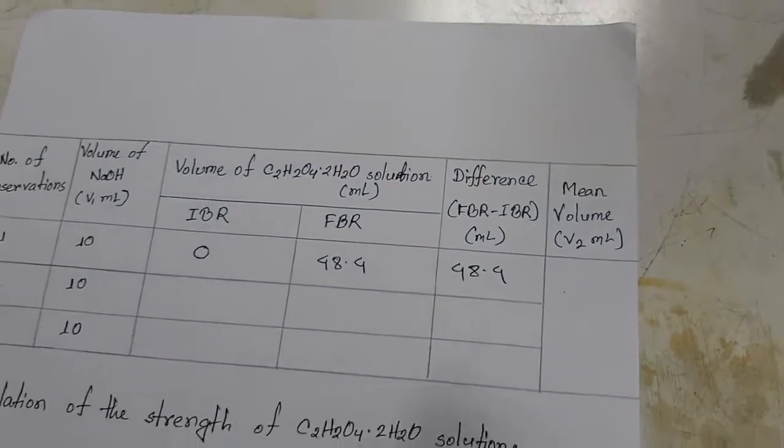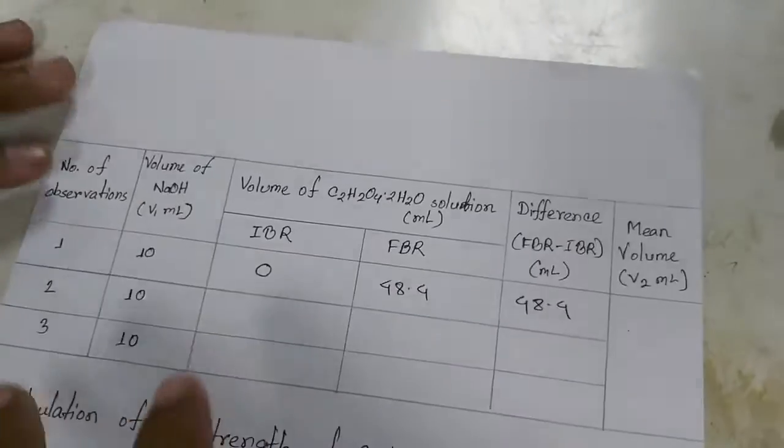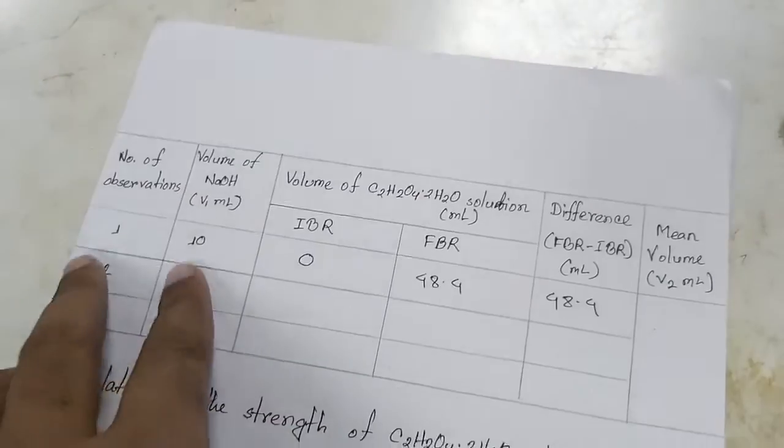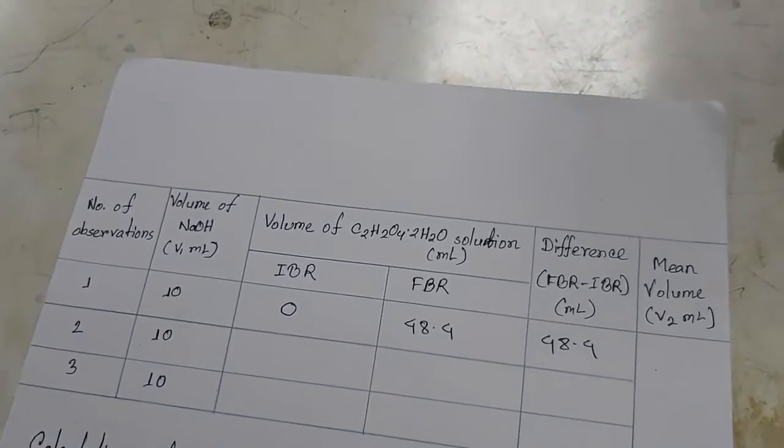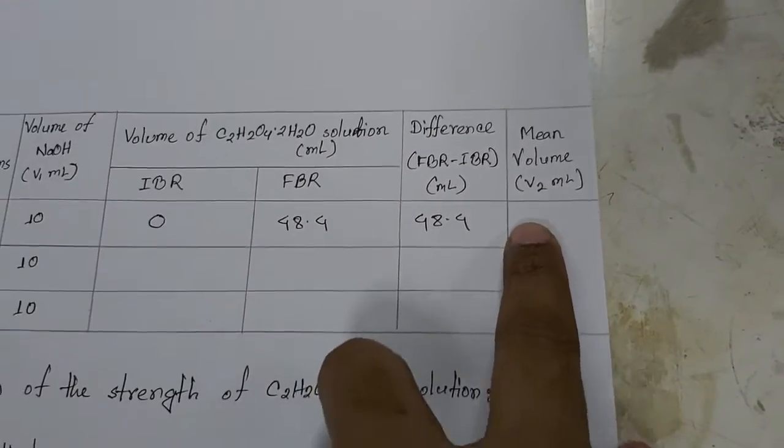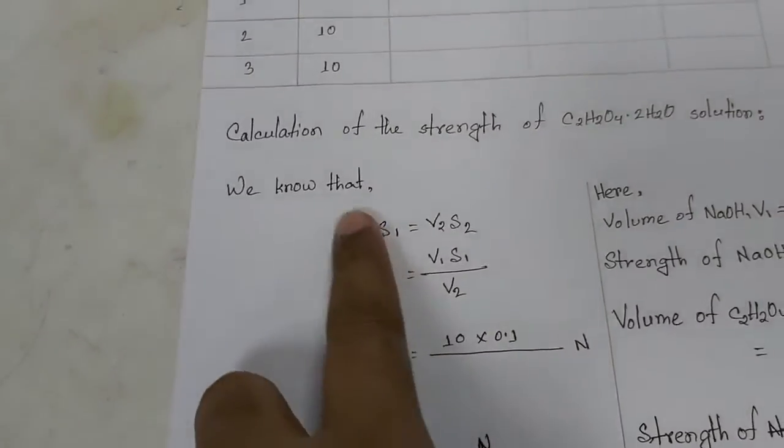We have to perform another two titrations, at least. After completing the three titrations there will be a mean, and this mean value will be v2.